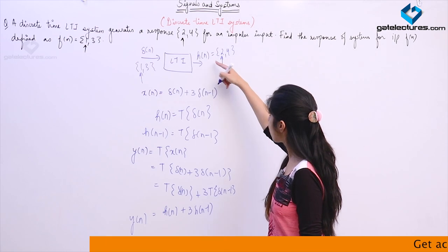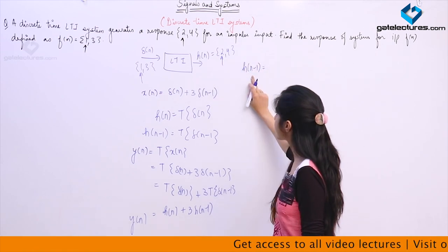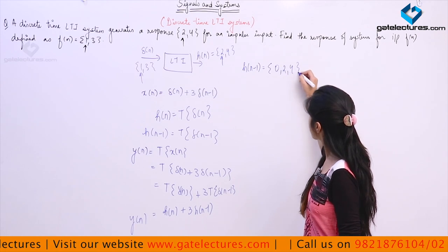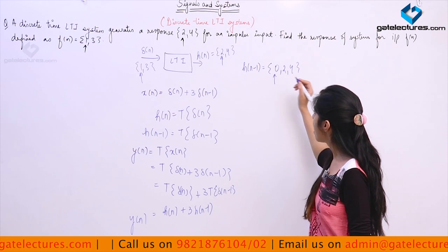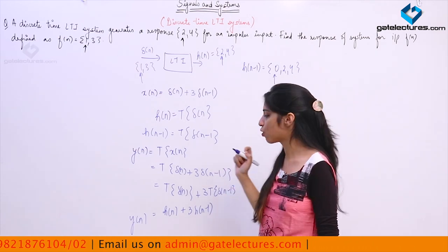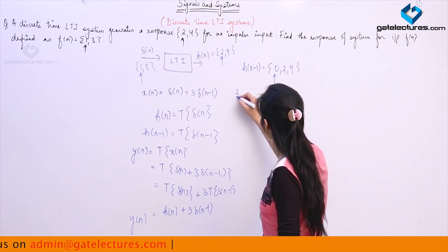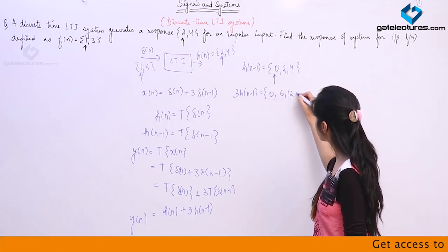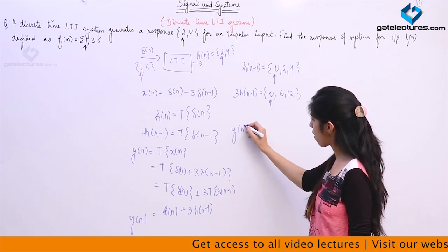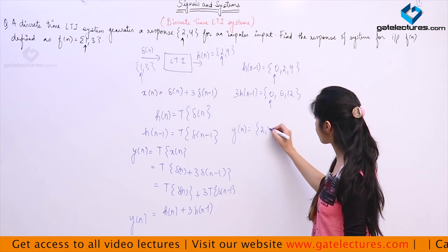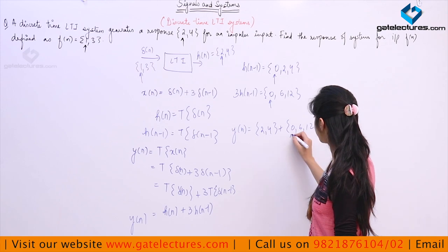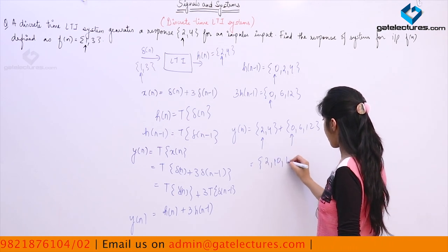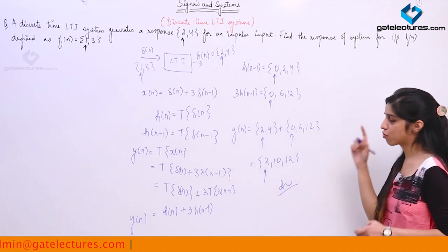You already know h[n] = {2, 4}. What is h[n-1] going to be? h[n-1] means I have shifted this signal to the right by 1 unit. The value which occurred at n=0 previously is now at n=1, and at n=0 we get a new sample of value 0. So h[n-1] = {0, 2, 4}. Then 3·h[n-1] = {0, 6, 12}. Therefore y[n] = {2, 4} + {0, 6, 12}, giving samples at n=0, 1, 2 as {2, 10, 12}.